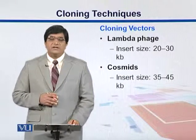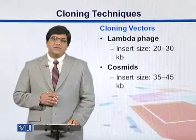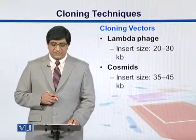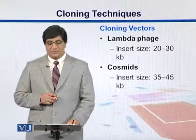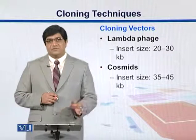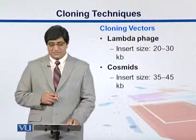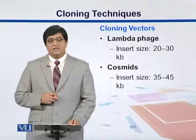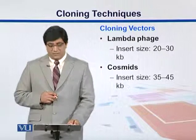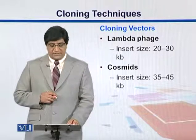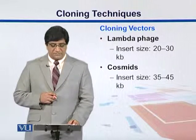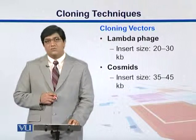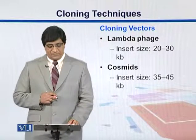There are different types of cloning vectors. Lambda phages, for example, are derived from viruses and have an insert size of 20 to 30 kb. Cosmids can take up to 35 to 45 kb and are good for smaller fragments.